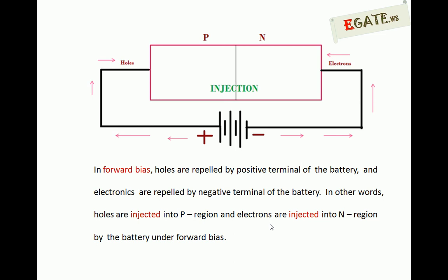Forward bias definition: with respect to a single battery, whenever the positive terminal of the battery is connected to the p-side and the negative terminal is connected to the n-side, the p-n junction is said to be under forward bias. With respect to practical circuitry, a p-n junction is under forward bias whenever the p-side voltage (anode) is more positive than the voltage on the n-side (cathode).